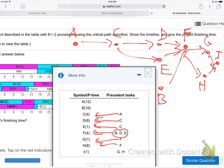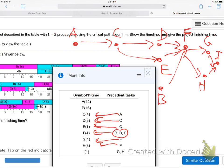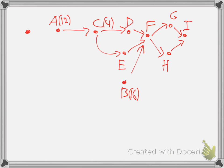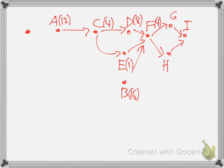I'm just going alphabetical. So: 12, 16, 4. Now I'll do the next three: 8, 1, 4. And then G, H, I: 1, 8, 1.